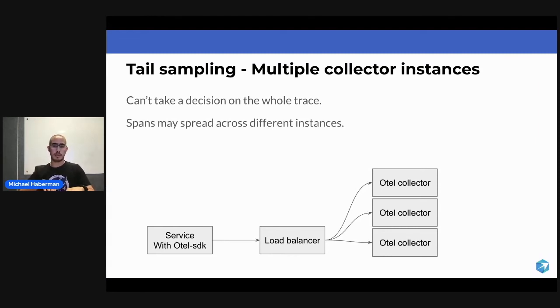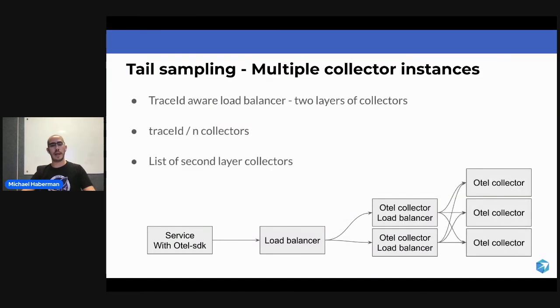That means that each collector is going to get part of the trace, so we can't take a decision on the whole trace. This is a problem. We don't want to do that because basically that means that we can't do tail sampling.